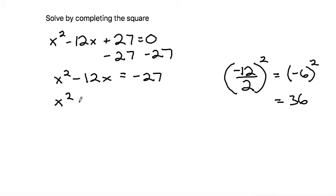So we take x squared minus 12x, add 36 here, and then to balance we have to add 36 to the other side of the equation as well. Next, simplifying negative 27 plus 36 gives us 9.